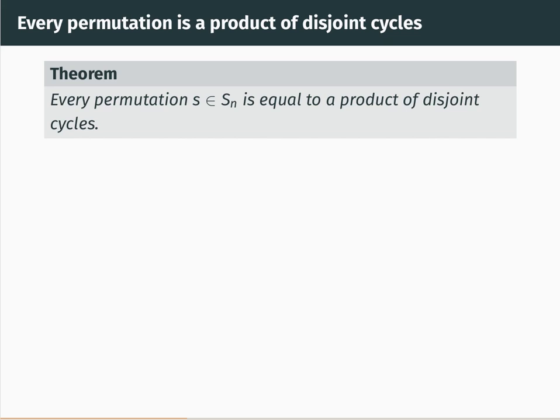Here's the statement of the theorem. Every permutation s in S_n, so every permutation of the set 1, 2, 3 up to n, is equal to a product of disjoint cycles. Writing this proof out properly takes a lot of time, so I'm not going to do it in the lecture. If you'd like to see it written down you can find it in the online notes for this section.